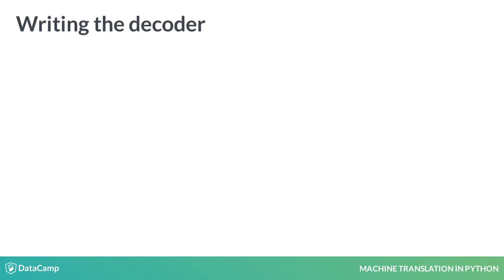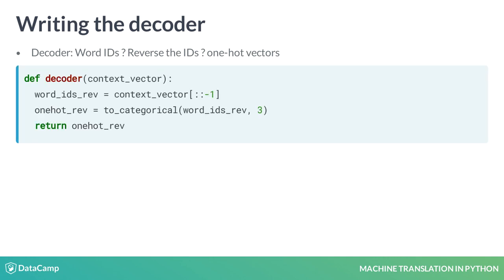The decoder will take in the word IDs, reverse the IDs, and then return the one-hot vectors of the reversed words. You write the decoder as a function which takes in the context vector produced by the encoder and produces one-hot vectors of the reversed words. The decoder function first reverses the word IDs in the context vector. In numpy, a 1D array can be reversed by adding '::−1' within square brackets. After reversing the word IDs, the one-hot vectors are obtained by calling the to_categorical function.